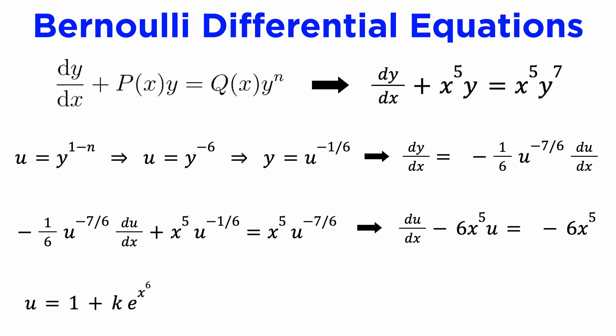Since we already know how to solve this linear DE using the integrating factor method, we will jump to its solution, which is u equals 1 plus k times e to the x to the sixth, where k is an arbitrary constant. All that's left to do is undo our substitution to get y instead of u, so we get the general solution to our DE as y equals 1 plus k times e to the x to the sixth, all to the negative 1/6.